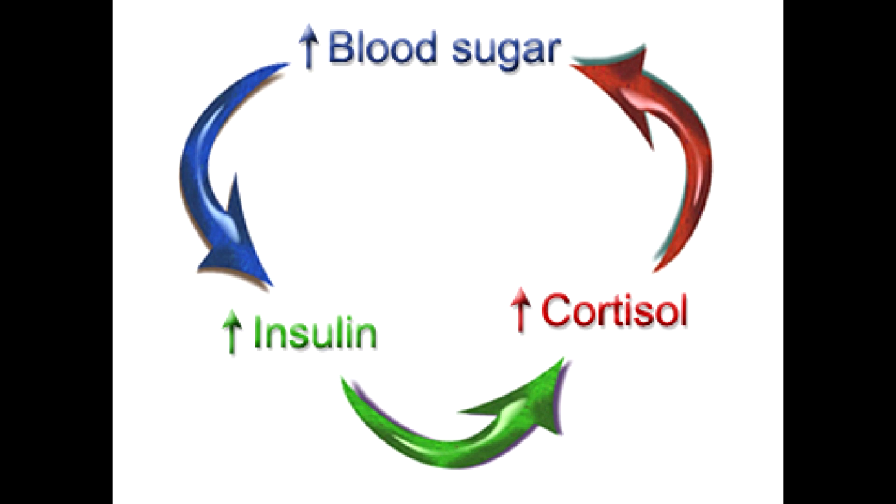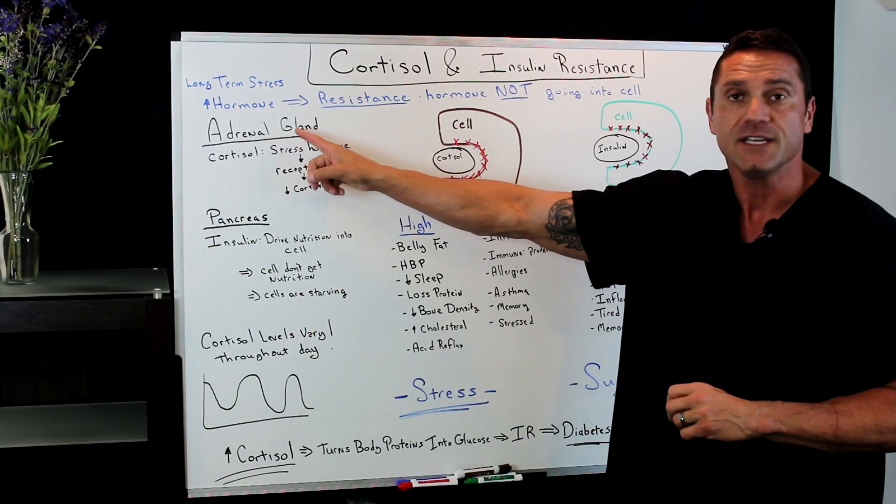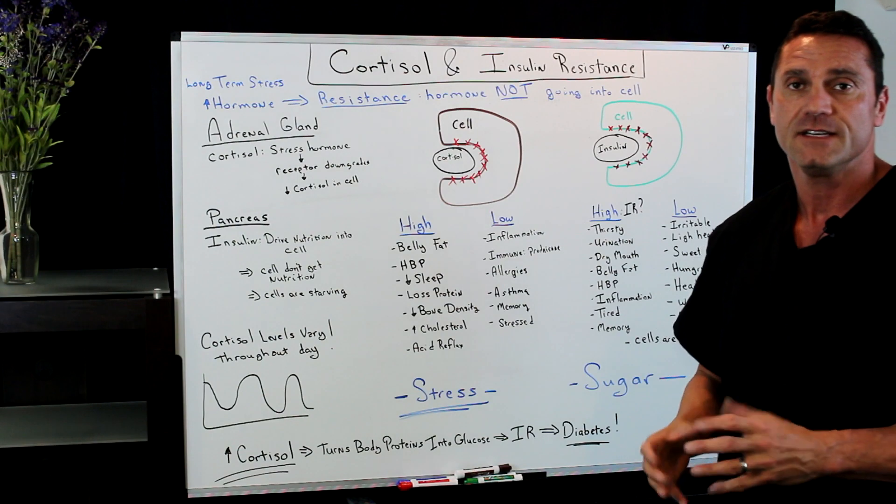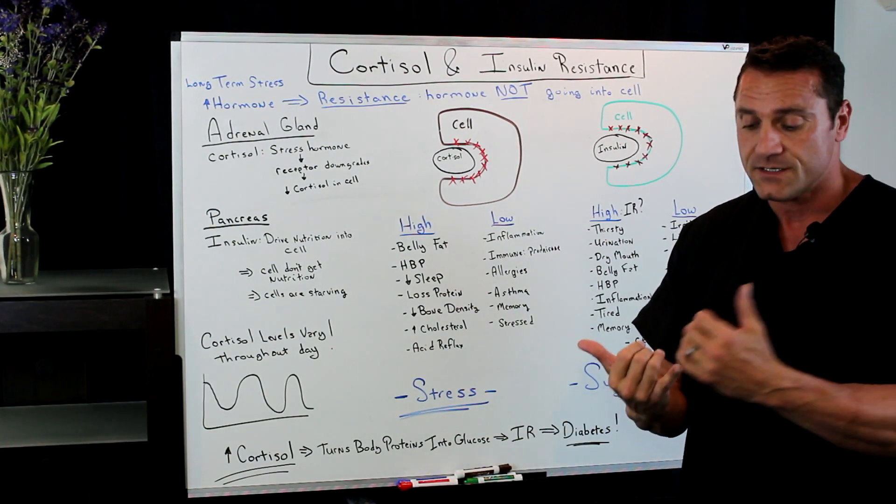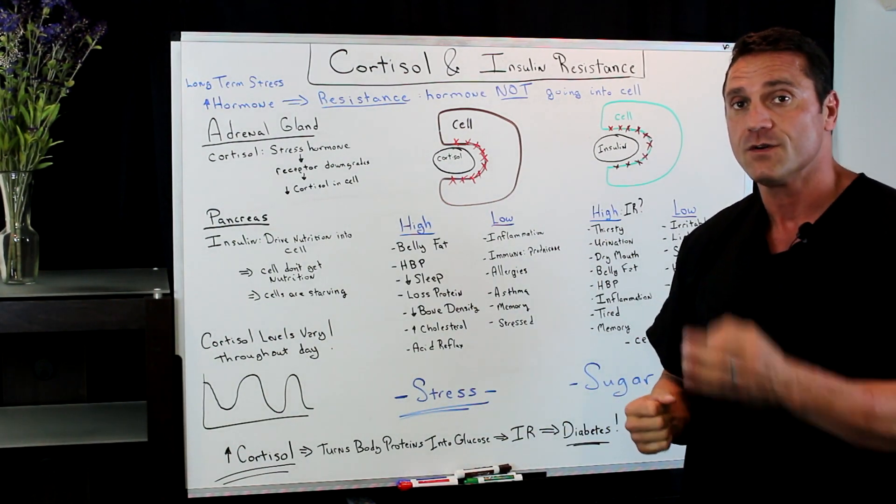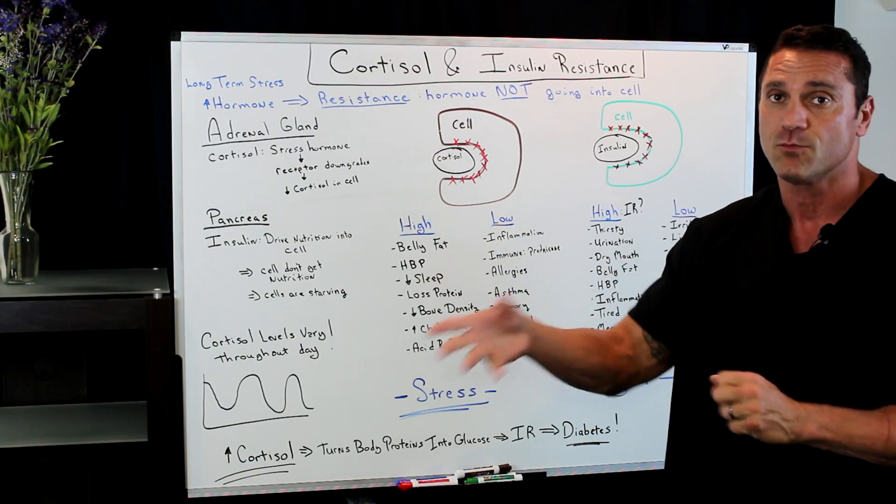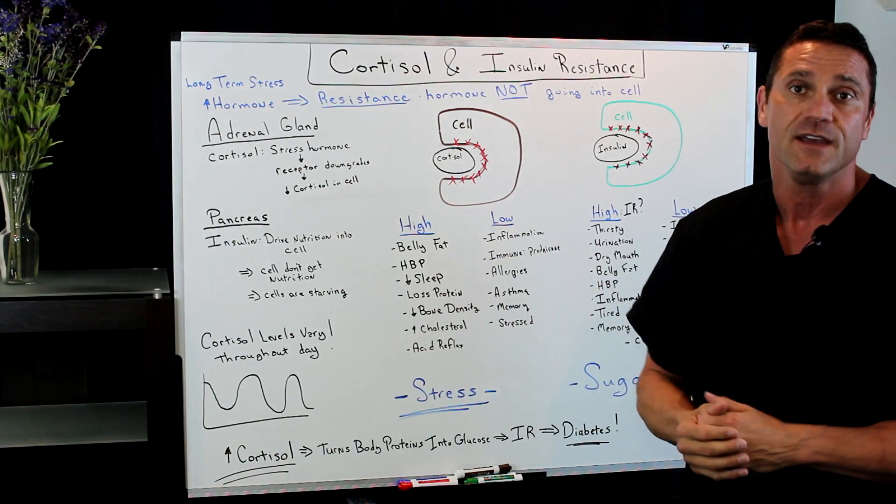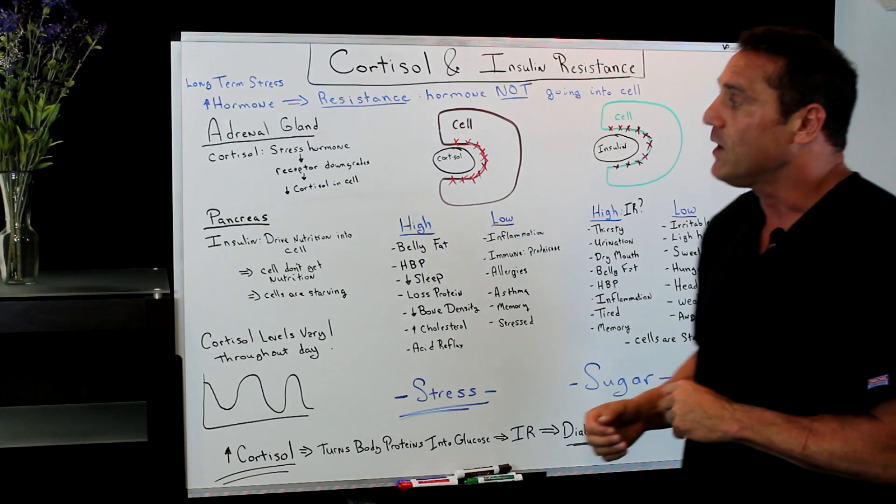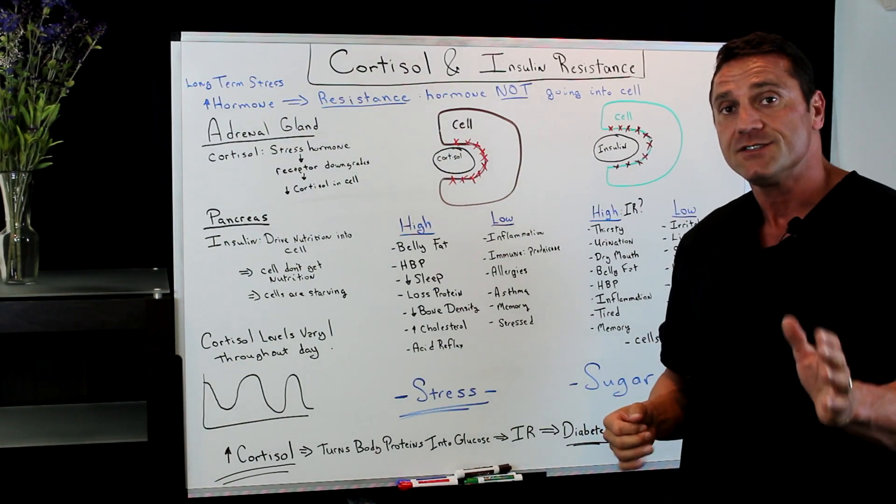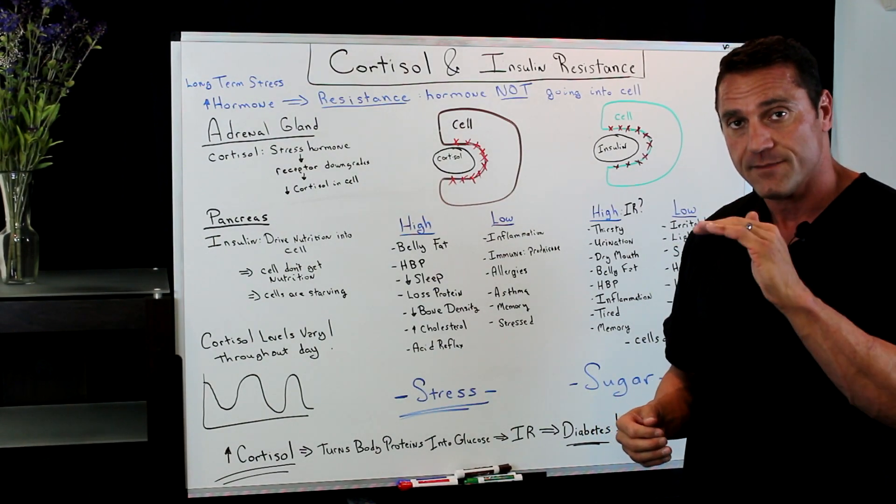What is cortisol? Cortisol is produced in the adrenal gland and is part of our stress hormone. It's also part of our immune response. Cortisol stimulates the immune system to release white blood cells to heal the body. It's released during times of stress.